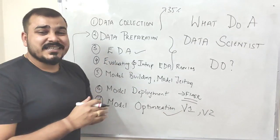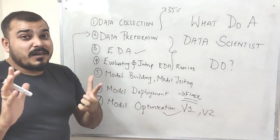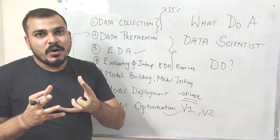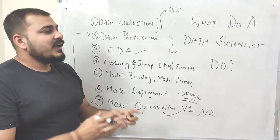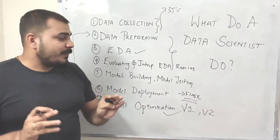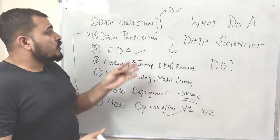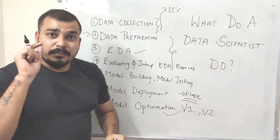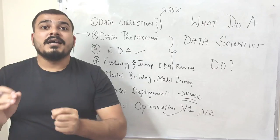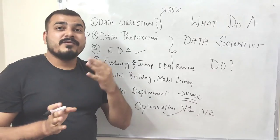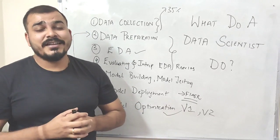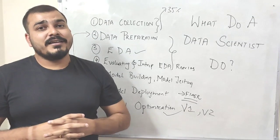In summary, a data scientist is involved in many discussions with stakeholders, which also helps build domain knowledge. Model building and testing are important, but the first four steps are very critical — many people are comfortable with model building but lack in these earlier steps. To be proficient, learn Python and pandas — understand data frames, series, and how to work with data in different ways. Please subscribe and share with your friends.